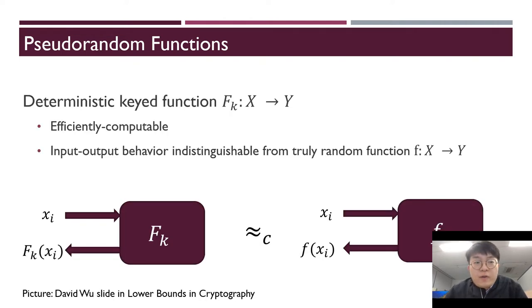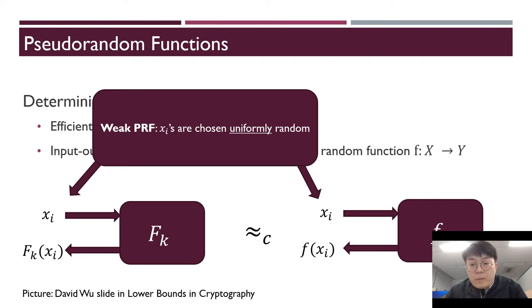Mathematical definition: a pseudorandom function is a deterministic keyed function that takes input x and produces output with a key embedded inside. Pseudorandom functions need to be efficiently computable, and their input-output behavior is computationally indistinguishable from a truly random function. We will focus on a particular relaxation of pseudorandom function, namely weak pseudorandom function. Weak PRF is the same as PRF, except the adversary does not get to make adaptive queries and only gets to see uniform random evaluations of the PRF.